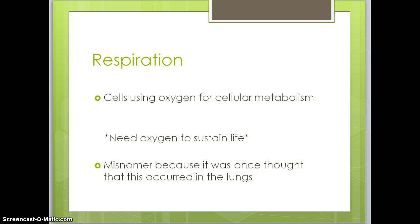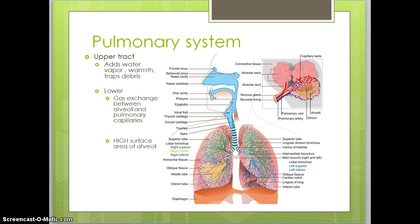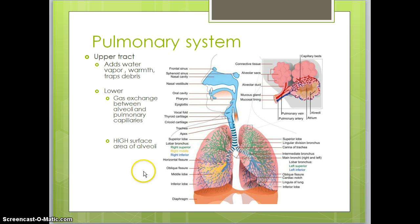Cells use oxygen for cellular metabolism. We need oxygen to live, and it's a misnomer because it was once thought that everything occurred in the lungs instead of the cells throughout our entire body. Here we have a diagram of the pulmonary system, with the upper tract and the lower tract. The upper tract adds water vapor and warmth, and traps debris in the cilia. The lower tract is where gas exchange occurs in the alveoli between the pulmonary capillaries. The alveoli have quite a high surface area — if we could spread it all out, the surface area would be about half of a tennis court.